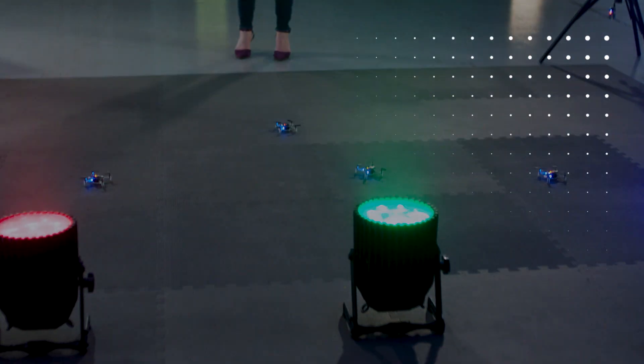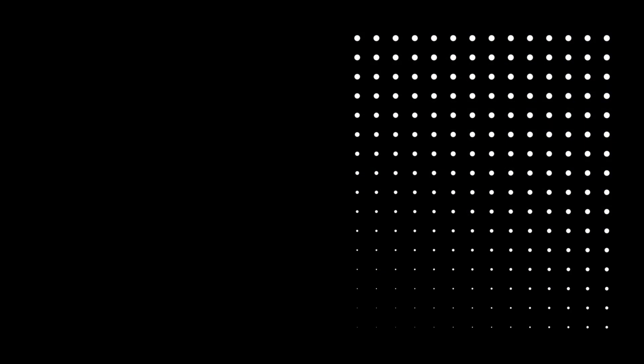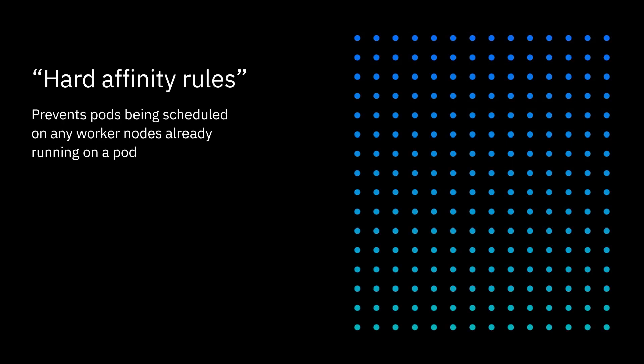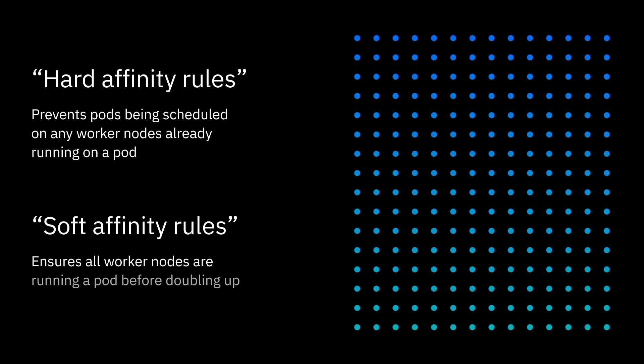It's important to understand and apply your affinity policies carefully. Kubernetes allows for both hard and soft affinity. You should rely on creating soft affinity rules if you want Kubernetes to fall back to its default scheduling when it's not able to meet your affinity rules.